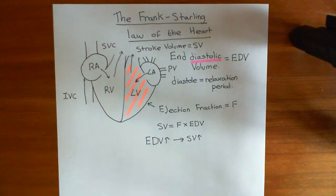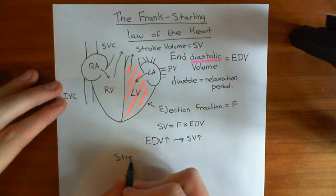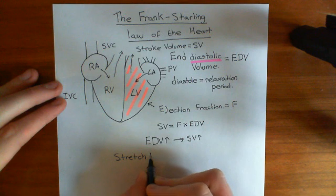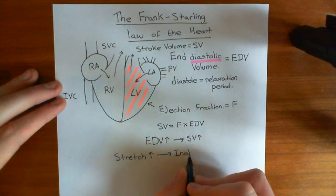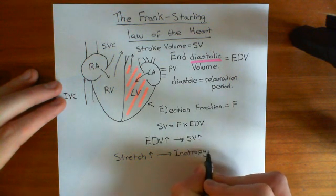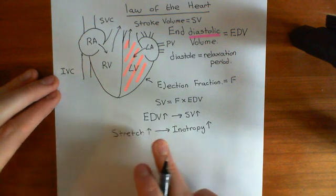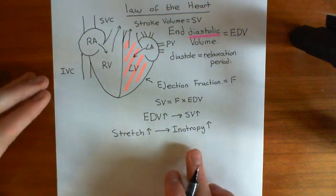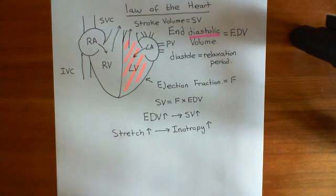That's the real Frank-Starling law of the heart: if you increase the stretch on the cardiomyocytes by increasing the end diastolic volume, then what it leads to is a greater force of contraction. There's a fancy word for the force of contraction: inotropy. Inotropy refers to the force with which cardiac muscle cells contract. In the next video, we'll discuss the structure of a cardiomyocyte and why stretching a cardiomyocyte more leads to a greater force of contraction.